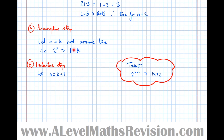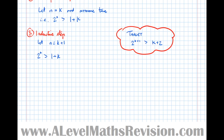The way we're going to hit this target is by taking our assumption. This is a little trickier than other proofs by induction. We write down our assumption: 2 to the k is greater than 1 plus k. We need to do something to both sides to make it look more like our target. To get from 2 to the k to 2 to the k plus 1, we multiply by 2. So: 2 times 2 to the k is greater than 2 times 1 plus k, which gives us 2 to the k plus 1 is greater than 2 plus 2k.